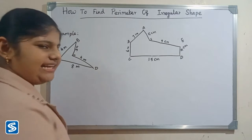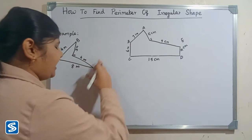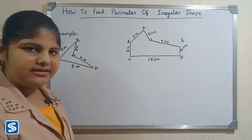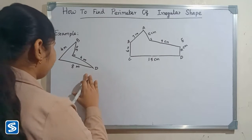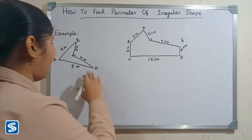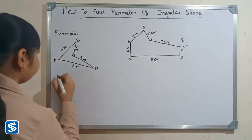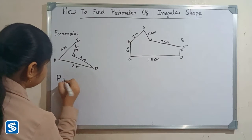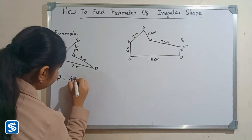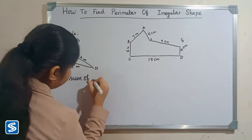This is an irregular shape. Now we have to find the perimeter of this irregular shape. To find the perimeter of an irregular shape, we just have to add the length of all sides. So perimeter is equal to the sum of the lengths of all sides.